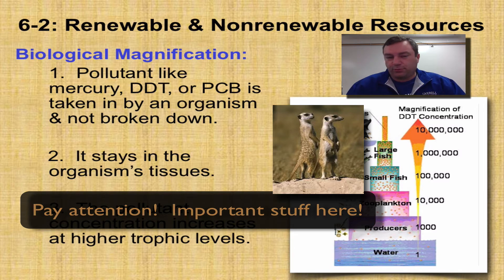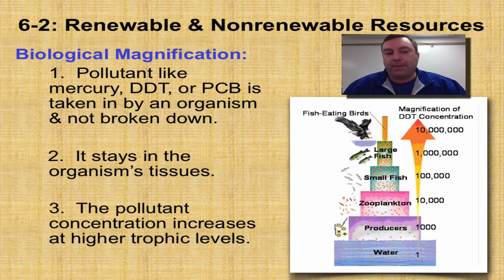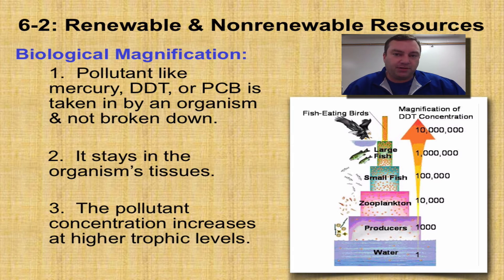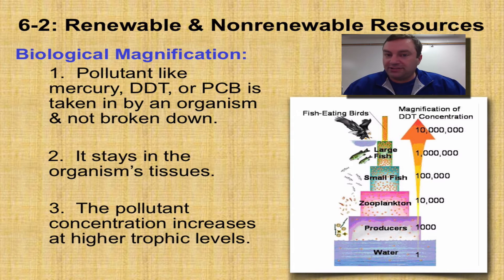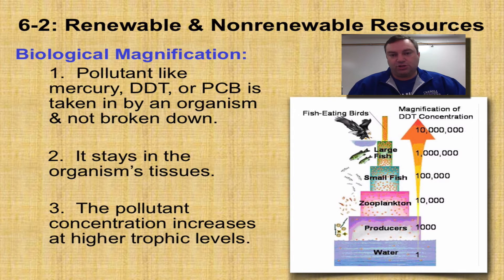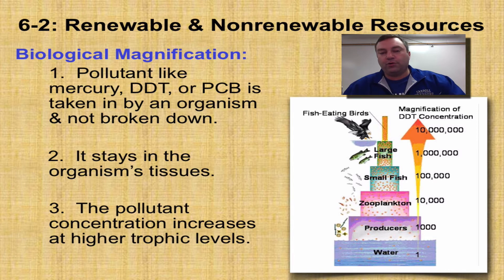This is probably the most important part of this episode, and you're definitely going to have some testing and quizzes over this. This is called biological magnification. Certain pollutants, when they get into the water supply, are going to be taken in by organisms as they move up the food chain. The problem with these certain types of pollutants is they're not broken down by the organism, so they stay in their tissues. As you move up the trophic levels, that pollutant becomes more and more concentrated in the individual's tissues.